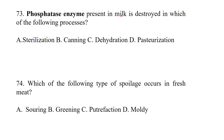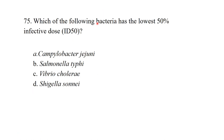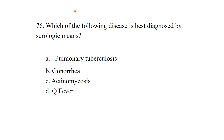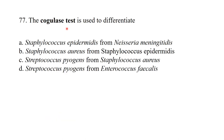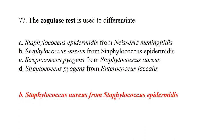Phosphatase enzyme present in milk is destroyed during which farming process? During pasteurization, phosphatase enzyme is destroyed. Which type of spoilage occurs in fresh meat? It is putrefaction. Which of the following bacteria has the lowest 50% infective dose? The coagulase test is used to differentiate Staphylococcus aureus from Staphylococcus epidermidis. Q fever is caused by Coxiella burnetii.